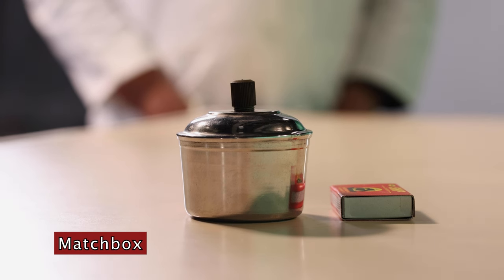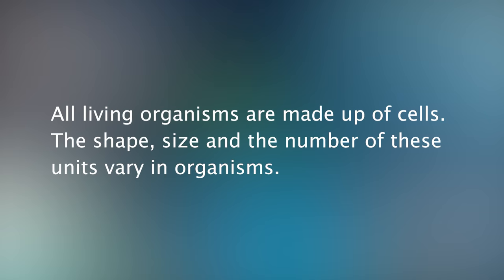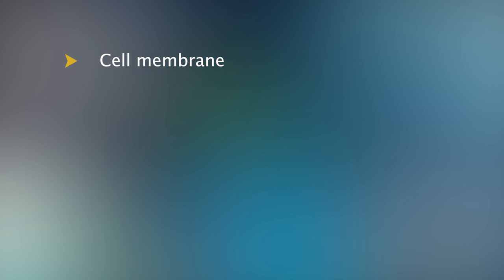All living organisms are made up of cells. The shape, size and the number of these units vary in organisms. The three major components of a cell are the cell membrane, cytoplasm and nucleus. In a plant cell, a cell wall surrounds the cell membrane.